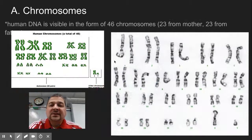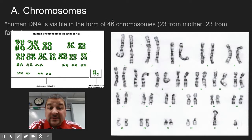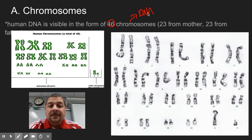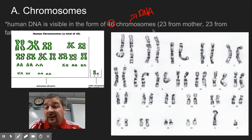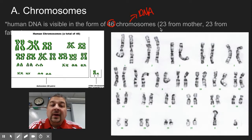The first thing to understand is that the human cell — humans — have 46 chromosomes. This is your DNA from your mother and your father. You kind of look like mom, kind of look like dad. You have 23 chromosomes from mom and 23 from dad.